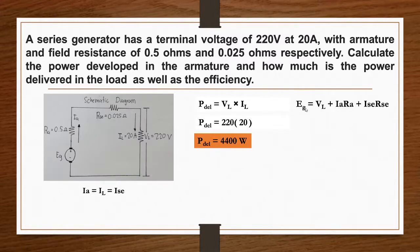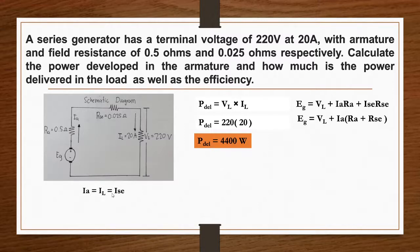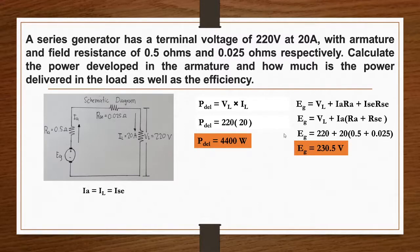Solving for generated voltage: EG equals load voltage plus armature current times armature resistance plus Ise times Rse. Since our circuit is a series connection, Ise equals armature current. So 220 plus 20 times 0.5 plus 0.025 ohms. Our generated voltage equals 230.5 volts.